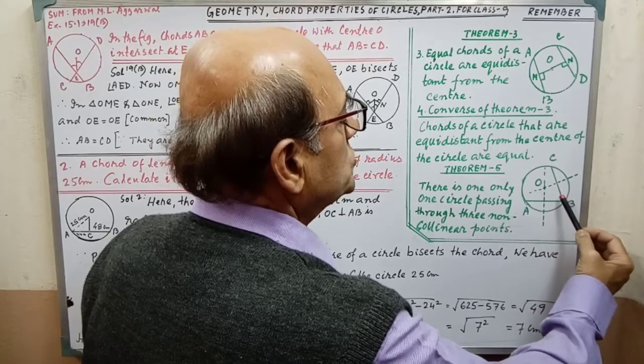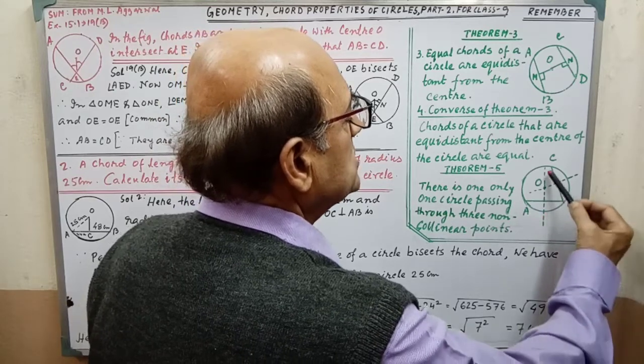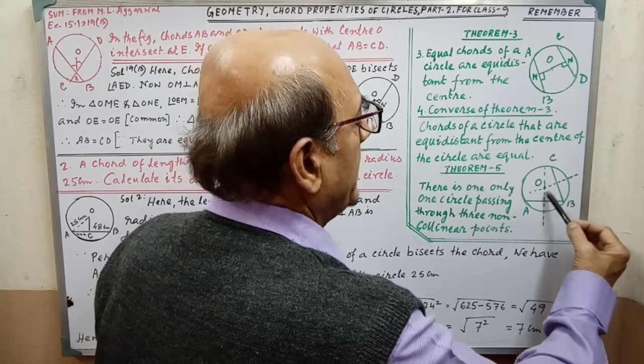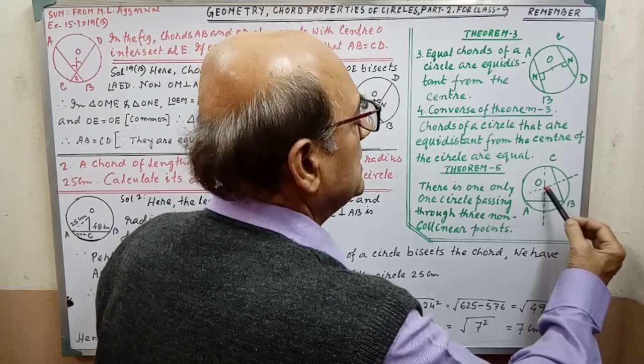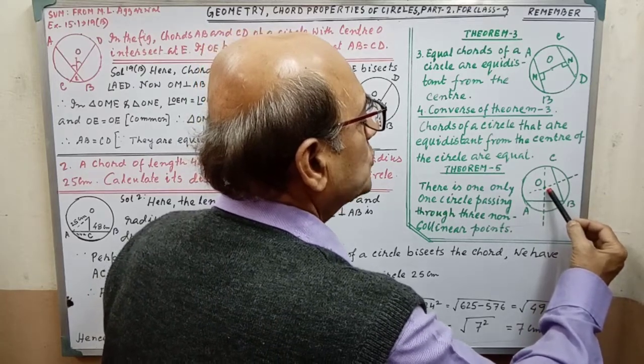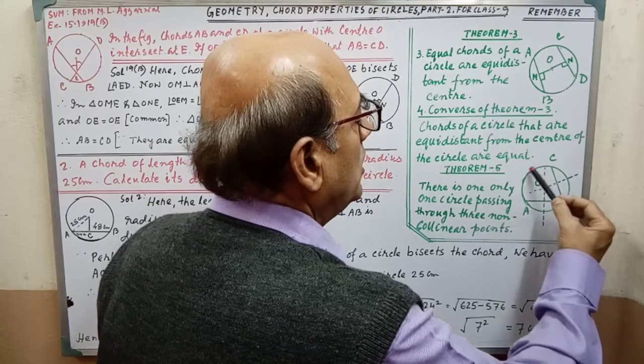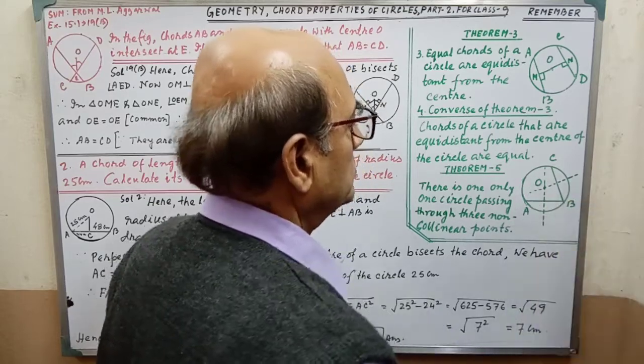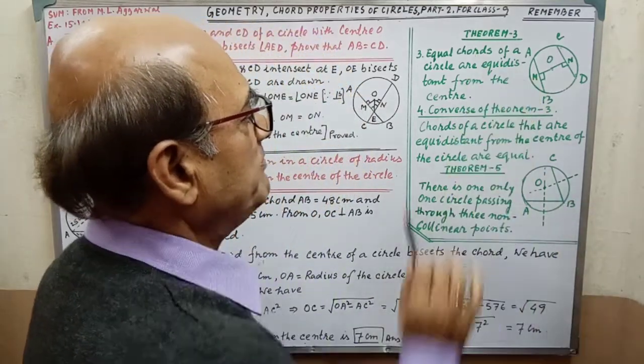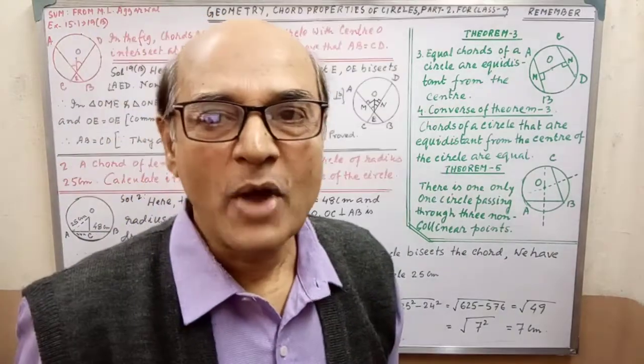By joining the points, we are getting AB, BC, two segments. By bisecting these two segments, two bisectors of AB and BC, they are meeting at O. This is why only one circle can be drawn. This statement with diagram, you have to remember.